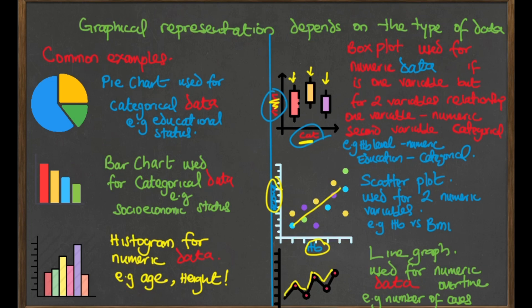To recap: pie chart and bar chart are used for categorical variables. The histogram is used for numerical data. The box plot is used for numeric data — with one variable, or when examining the relationship between two variables where one is numeric and one is categorical. The scatter plot is used for two numeric variables. The line graph is for numeric data distributed over time.